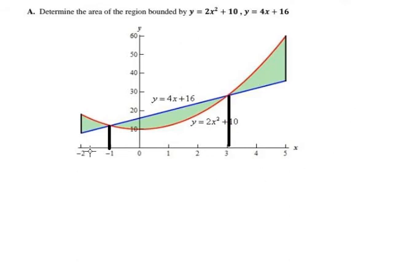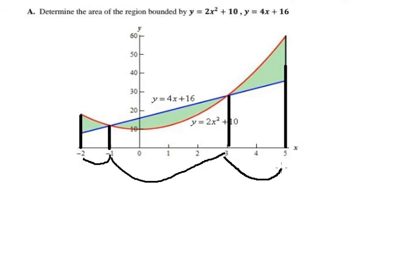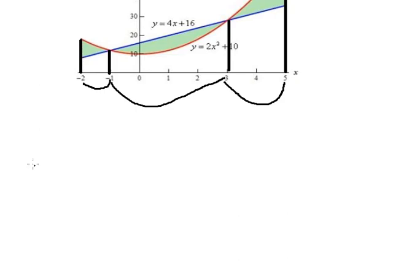We know that the domain goes from negative two to positive five. If we look carefully, we can see that we have three areas. The first one is from negative two to negative one, the second from negative one to positive three, and the third from positive three to positive five. So we have three integrals to compute.